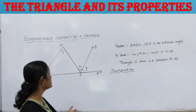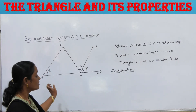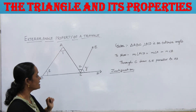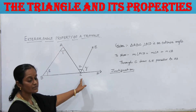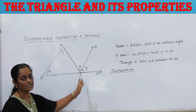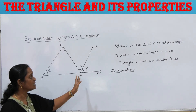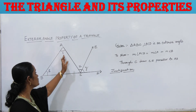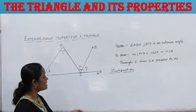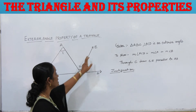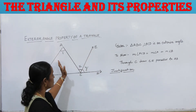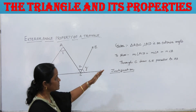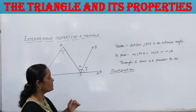You can also verify the exterior angle property of a triangle analytically. Draw a triangle and produce one of its sides BC to form the exterior angle ACD. We are given triangle ABC with exterior angle ACD. We have to show that the measure of angle ACD equals measure of angle A plus angle B. For this, draw a line CE parallel to AB through C.